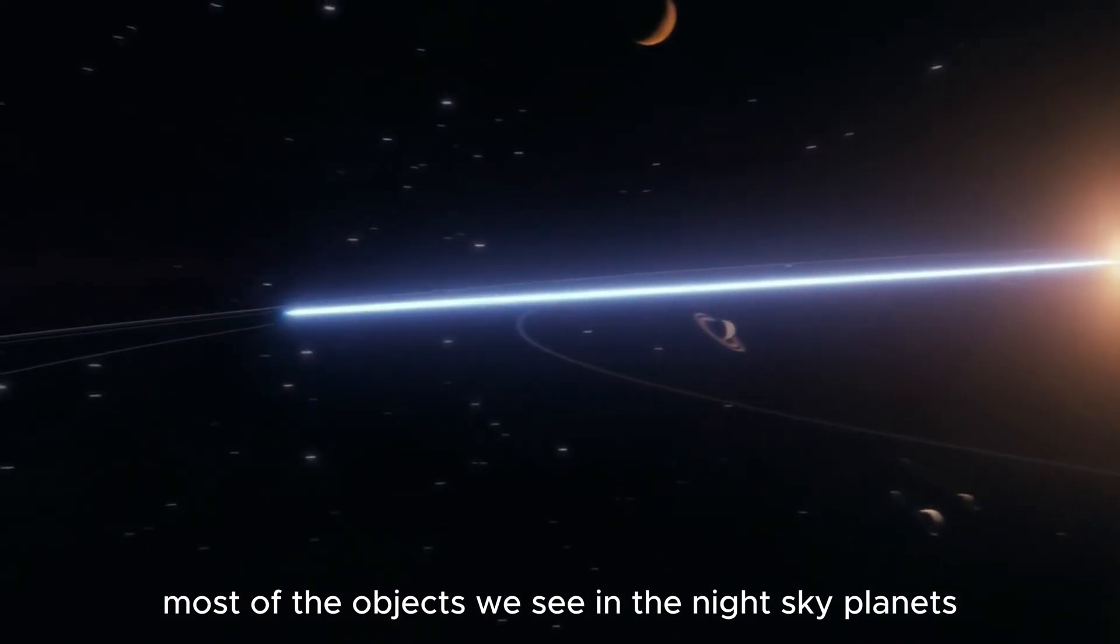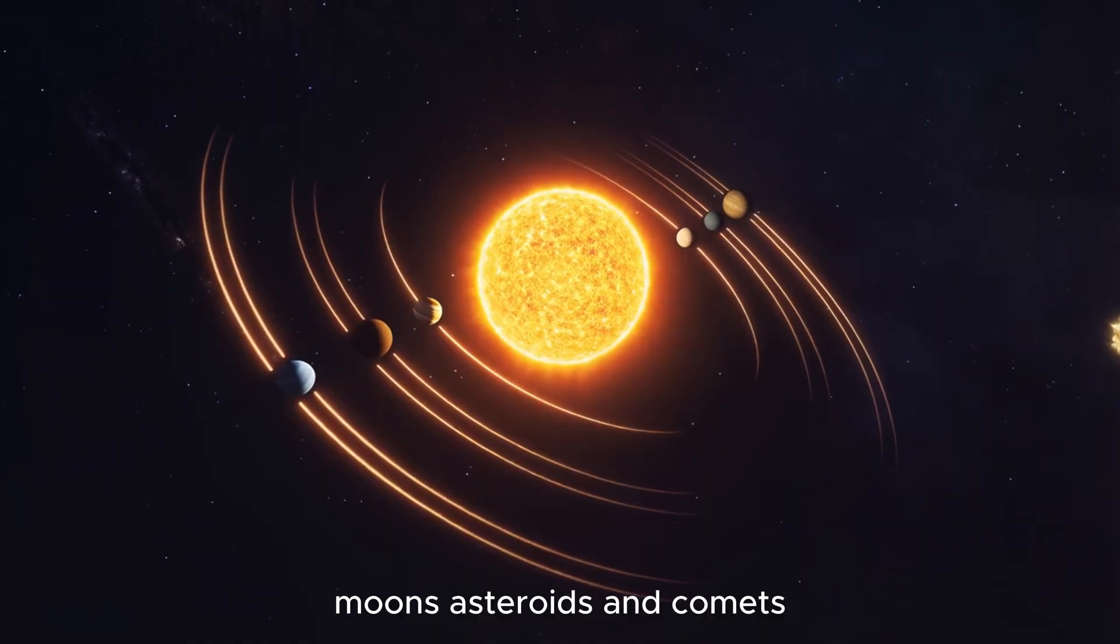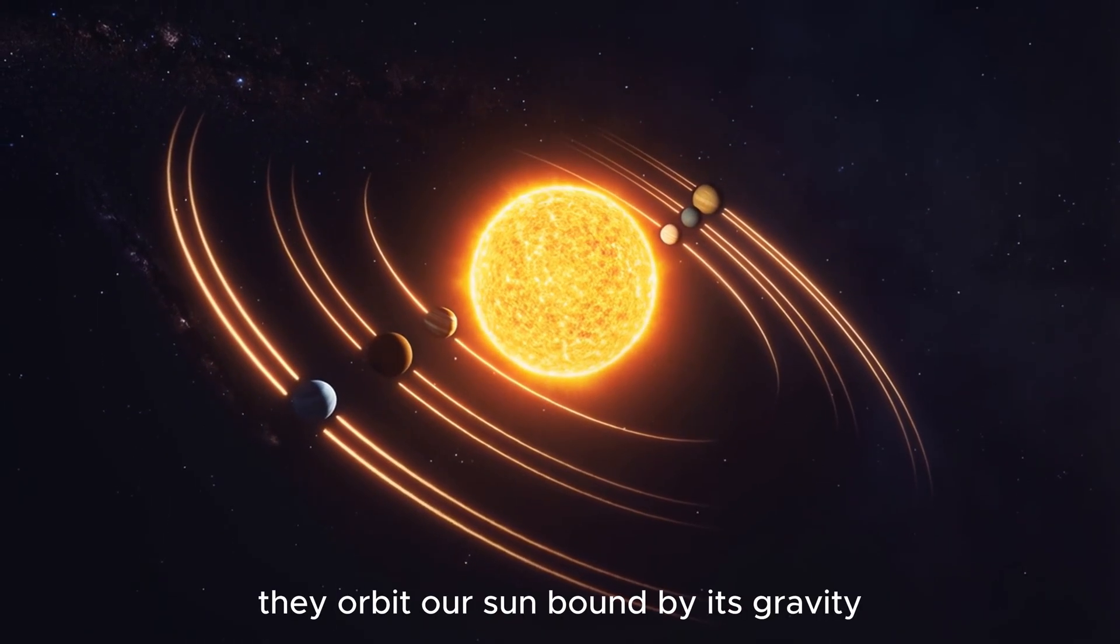Most of the objects we see in the night sky—planets, moons, asteroids and comets—belong to our solar system. They orbit our sun, bound by its gravity.